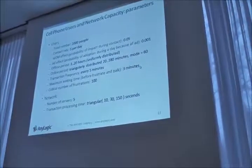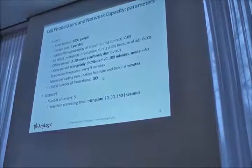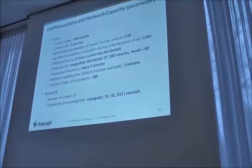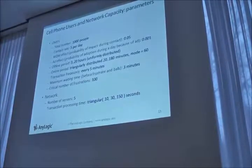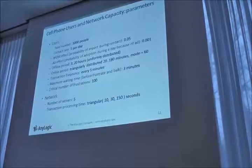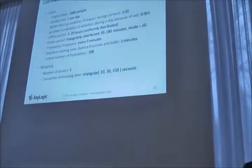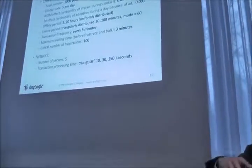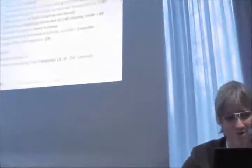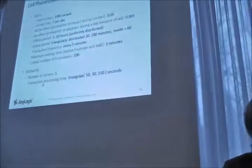The maximum waiting time is three minutes. Of course, these numbers are just for demo purposes. If the user accumulates 100 frustration experiences, he just stops using the service and starts telling others that it's not good. The user can convince users who have not yet decided — just don't go there, don't use the high-speed internet access from that company. There's a number of servers in the company, and this is just some transaction processing time. That part of the model will be descriptive and very simple.